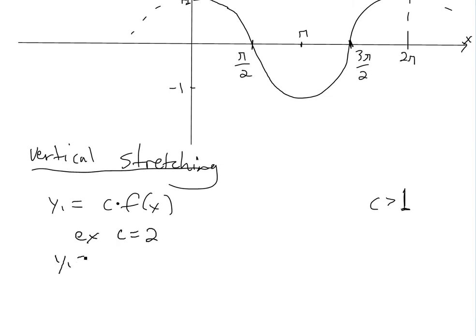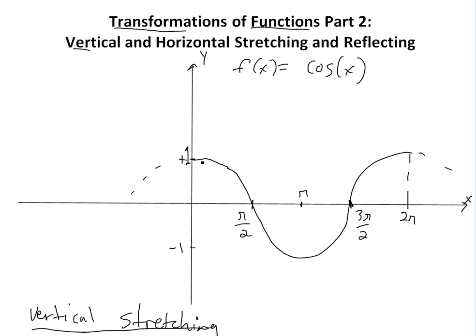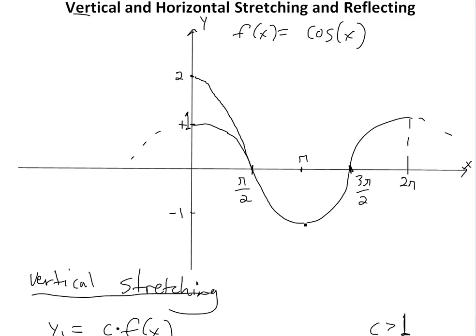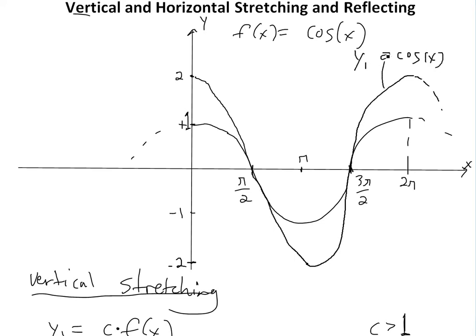So then we'll have y1 equals 2 times cos x. All we're doing is vertically stretching it — every value times it by 2. So at f of 0, this is just cos 0, which is 1, so times it by 2, so it's going to be 2. And at 0, this is 0 times 2, it just stays there. Then at pi, this is negative 1, times it by 2, it's going to be negative 2. So this graph would be y1 equals 2 times cos x.